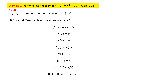Let us see an example to understand Rolle's theorem better. Verify Rolle's theorem for the function f(x) = x² - 5x + 6 on the interval [2, 3]. Here the starting point a is 2 and the ending point b is 3.